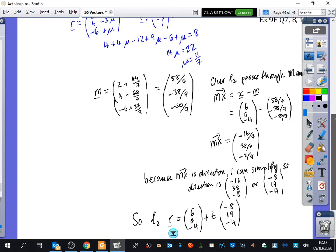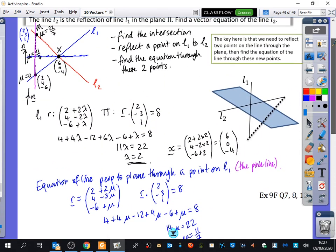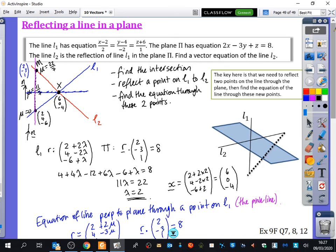Let's clarify what we did. When you revise, it's worth having a flashcard that says: find the intersection, reflect a point of L1 onto L2, then find the equation through those two points. It's a hard strategy to remember, but you want to look at the question and just know what you're doing. This is something that, if you want to be at an advantage, you should have memorized.